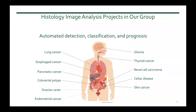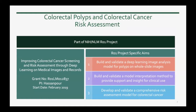Given these opportunities and shortcomings, my group works on building automated machine learning models for detection, classification, and prognosis for different lesions and conditions. Today, given my limited time, I'm going to talk about one of these research projects focused on colorectal polyps and colorectal cancer risk assessment.